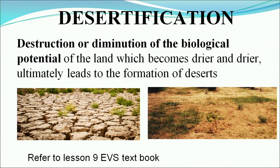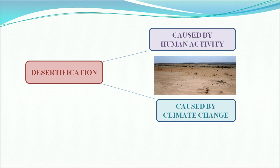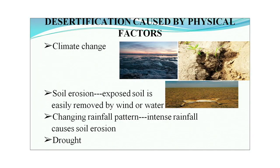Desertification is our next topic. Destruction or diminution of the biological potential of land, which becomes drier and drier and ultimately leads to formation of desert, is called desertification. Desertification caused by physical factors: due to climate change, soil erosion takes place and exposed soil is easily removed by wind or water. Changing rainfall patterns — intense rain or lack of rain — either way damage the soil, and drought further leads to desertification.